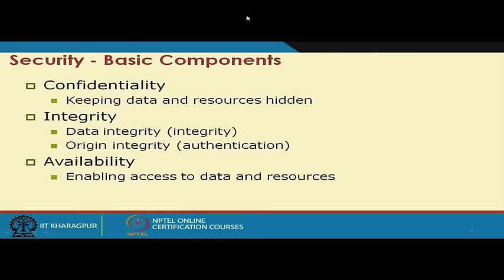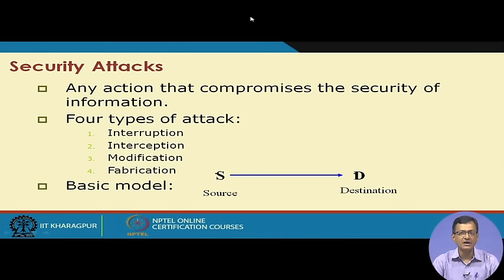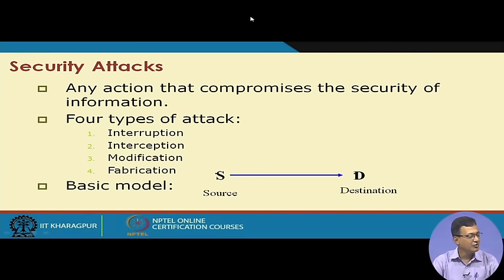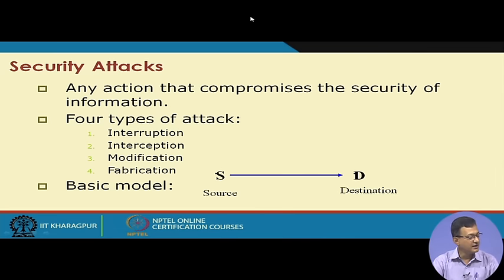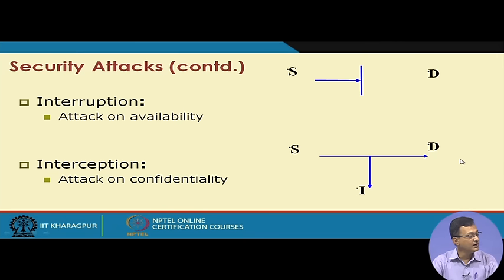Any security attack is any action that compromises the security of information — any action which violates the CIA components. There are typically four types of security issues: interruption, interception, modification, and fabrication. These four components encompass or are a combination of all things that are compromised during an attack. Our basic model is a source sending data to a destination, and when we talk about interruption, the message or communication path is interrupted.